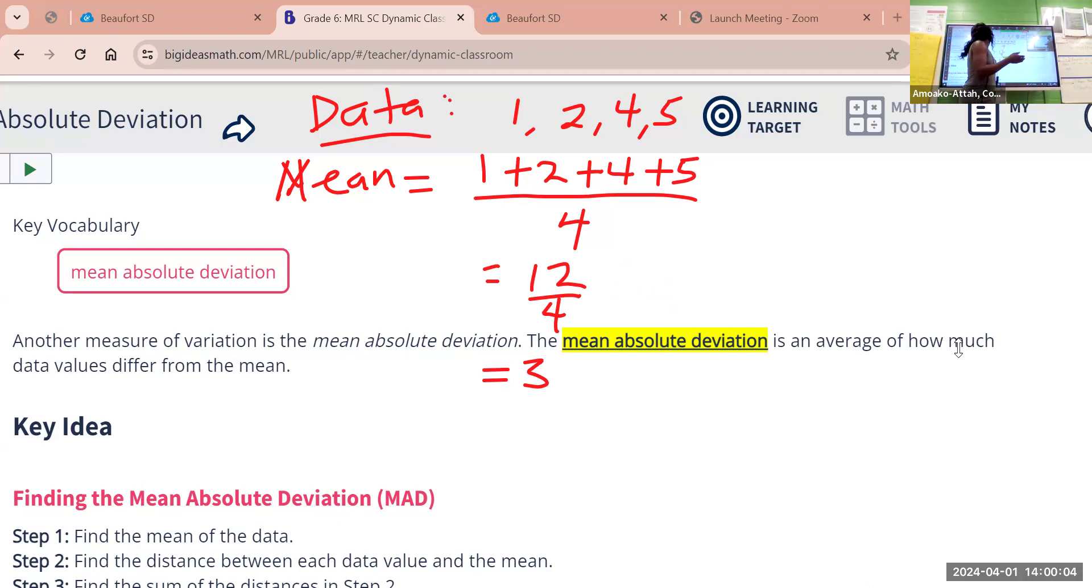Step two. Step two is to find the difference between the data value and the mean. So now we are finding the distance. Distance. That's absolute value. Distance. You measure the distance from the zero to the number.